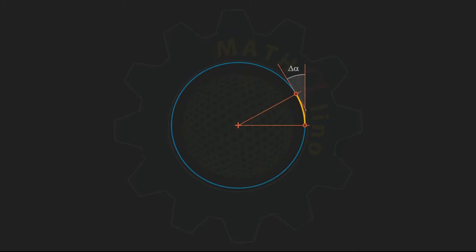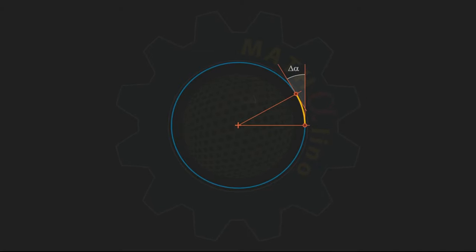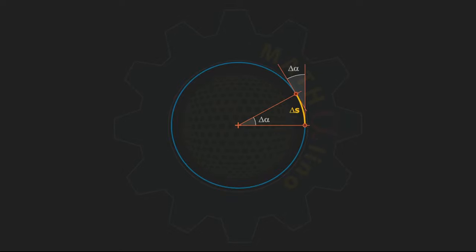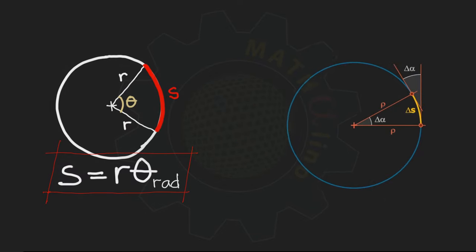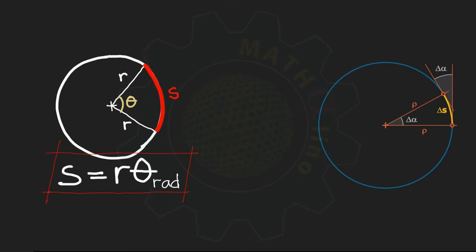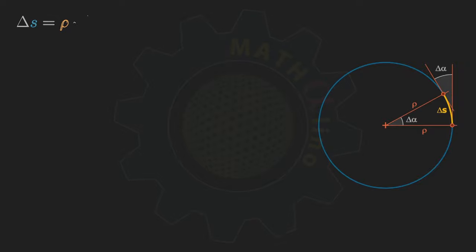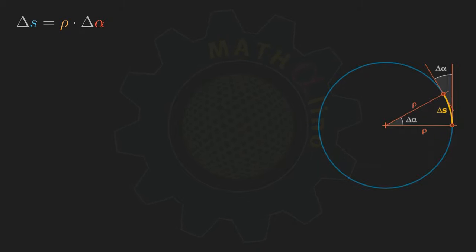Now let us capture this idea mathematically. Let us replace alpha with delta alpha to indicate that this angle is the change in direction between two tangents. From geometry, this change in angle is equal to the central angle of the arc between two tangent points. Let us call the length of this arc delta s, and the radius of the circle rho. Recall that the length of arc is equal to the radius times the central angle, so we have delta s is equal to rho times delta alpha.